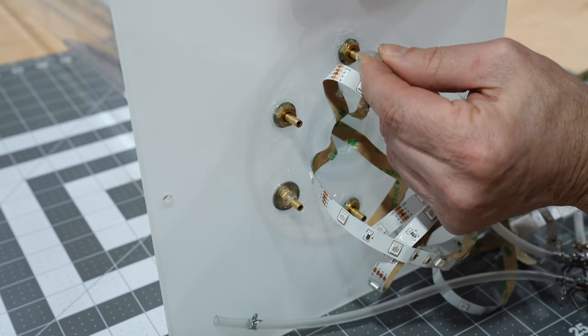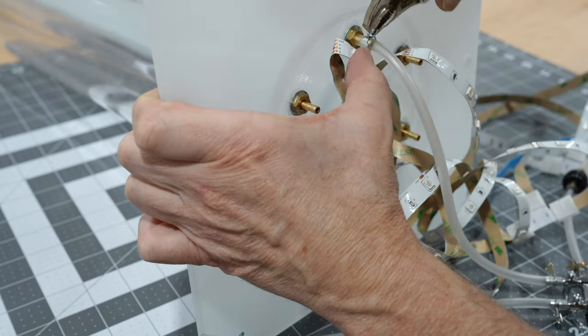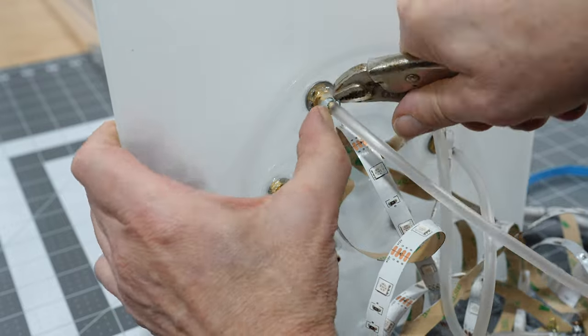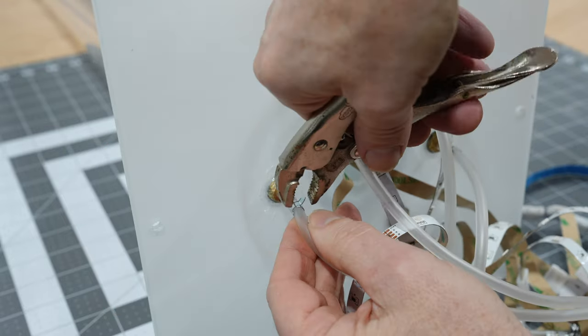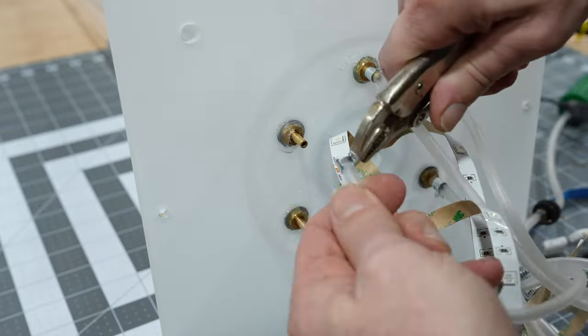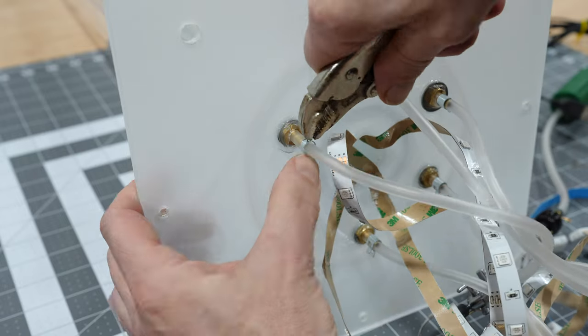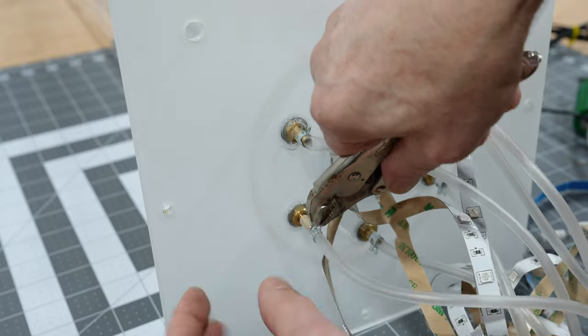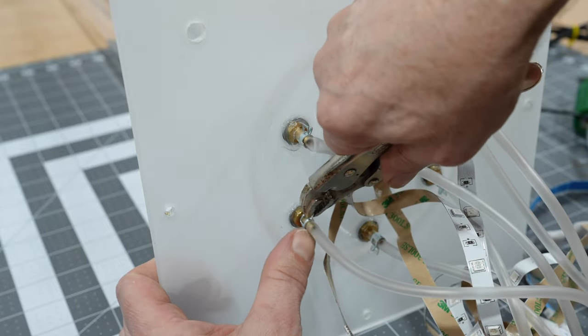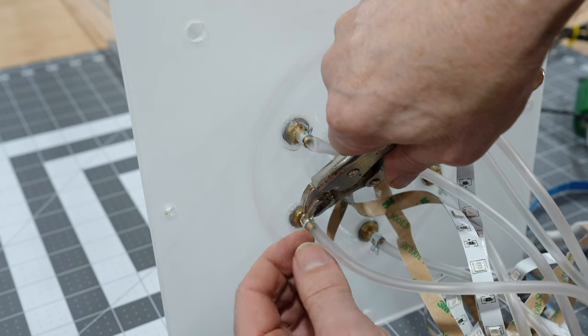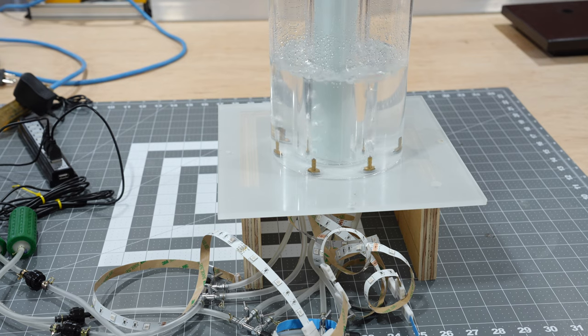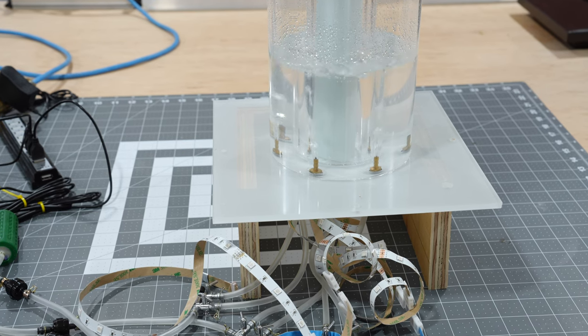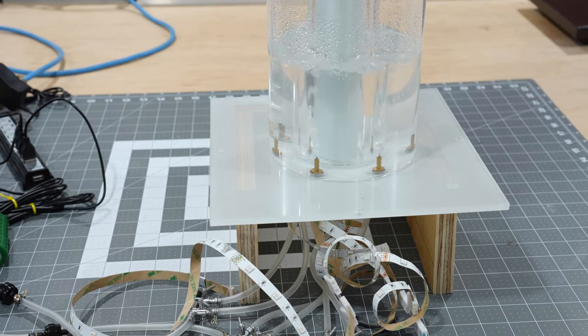Now I will attach the tubing to the bulkheads. With that complete, I now test for any leaks. After running the bubble tube for a few hours, everything is dry.